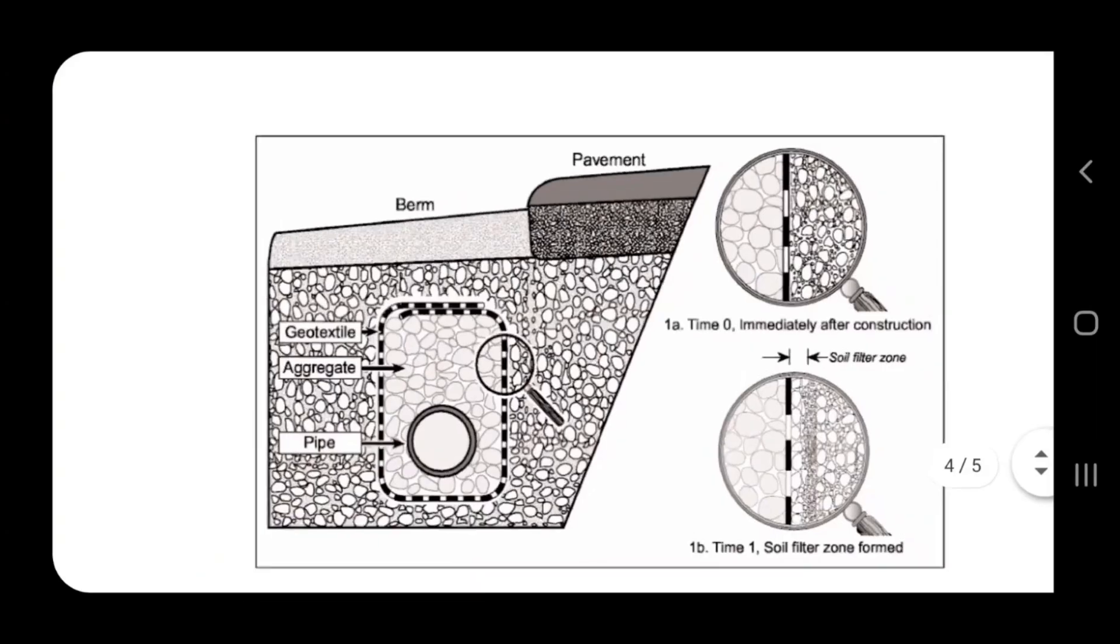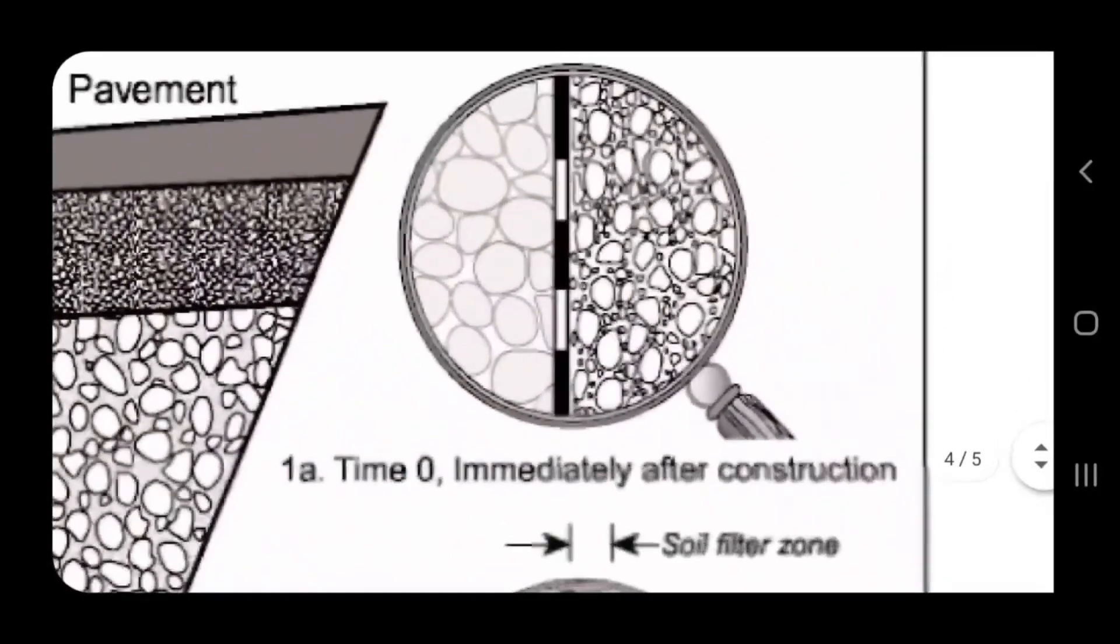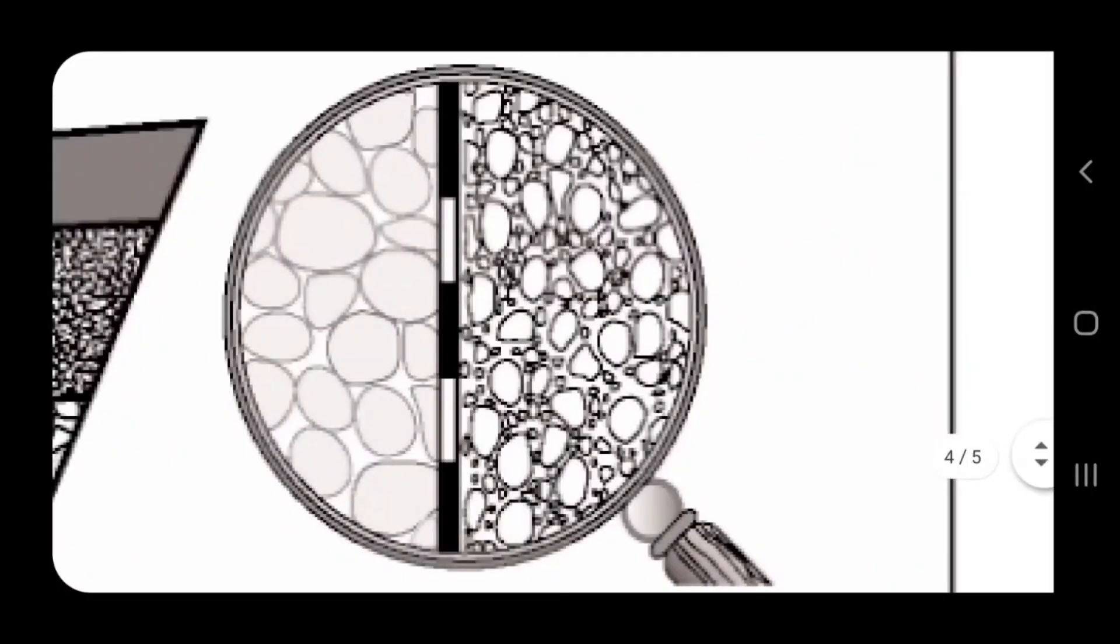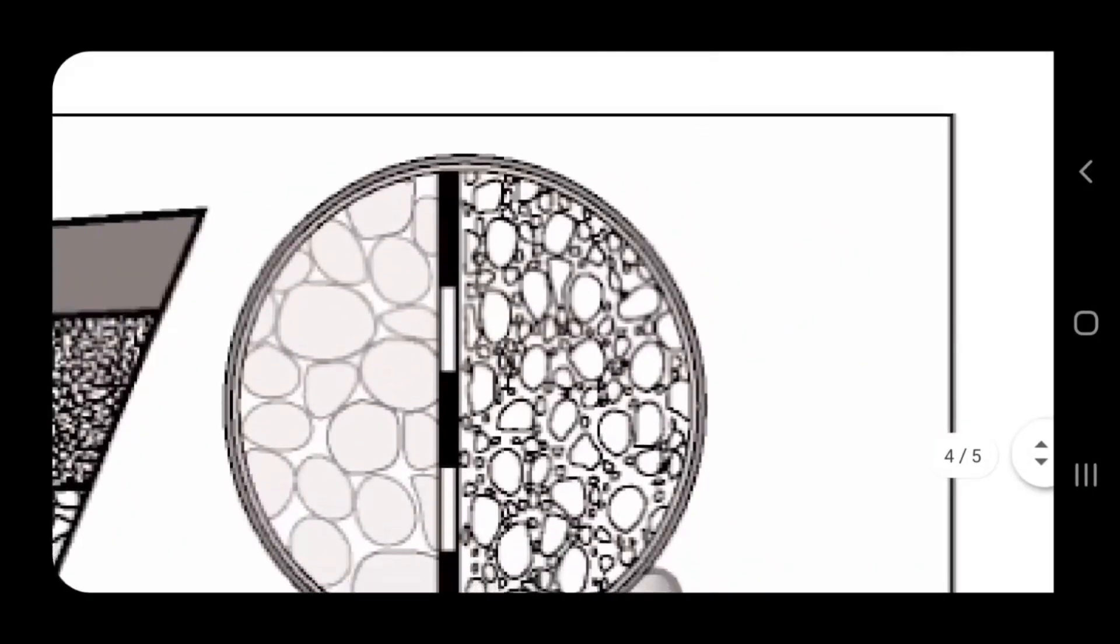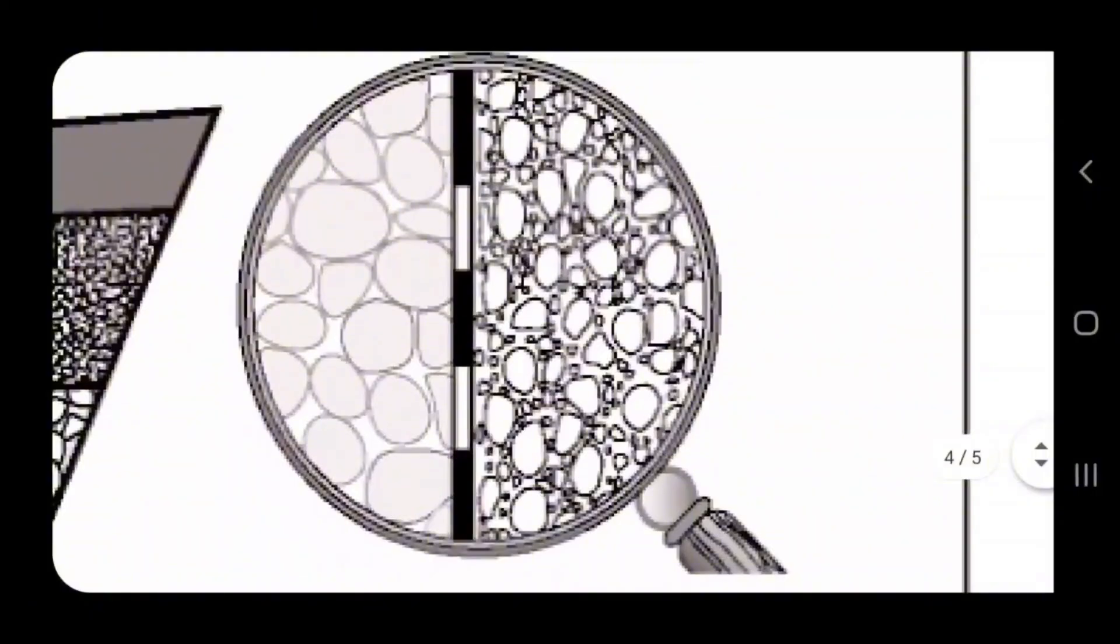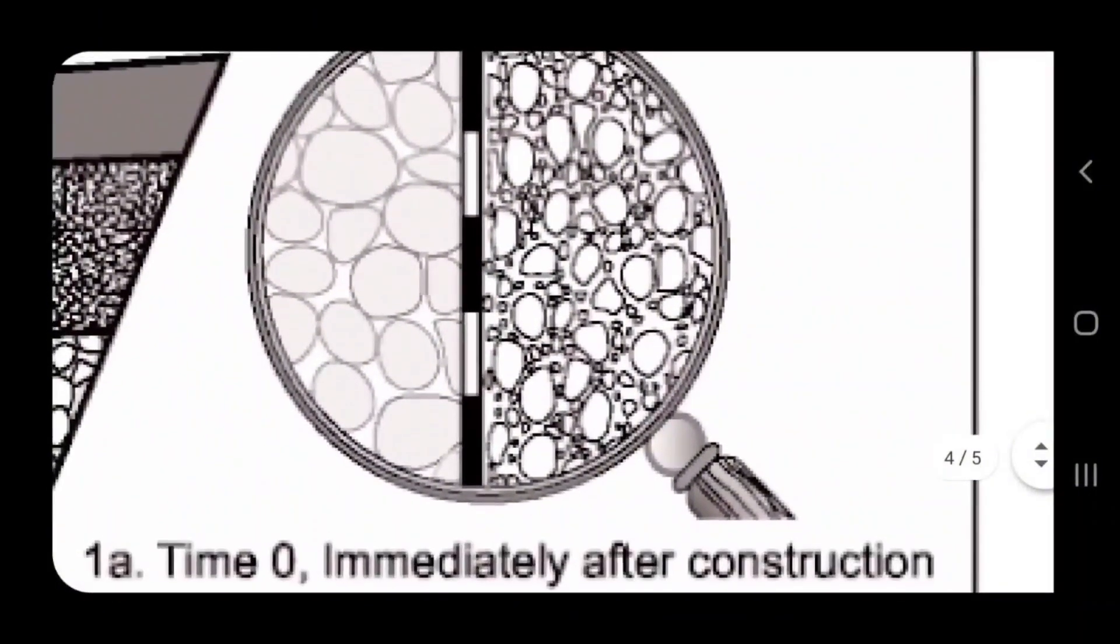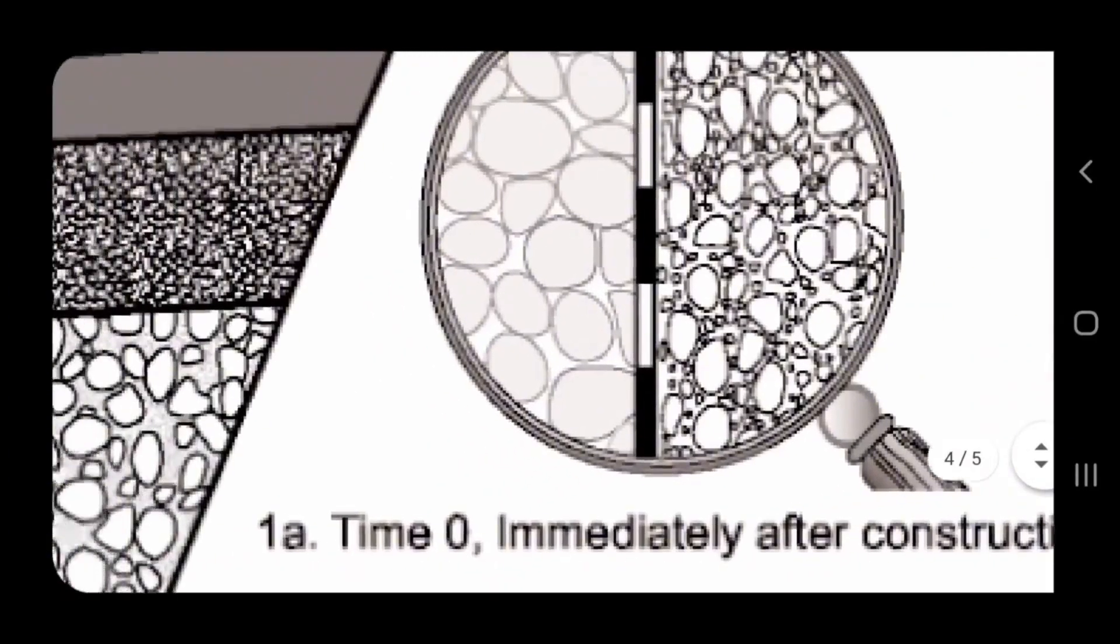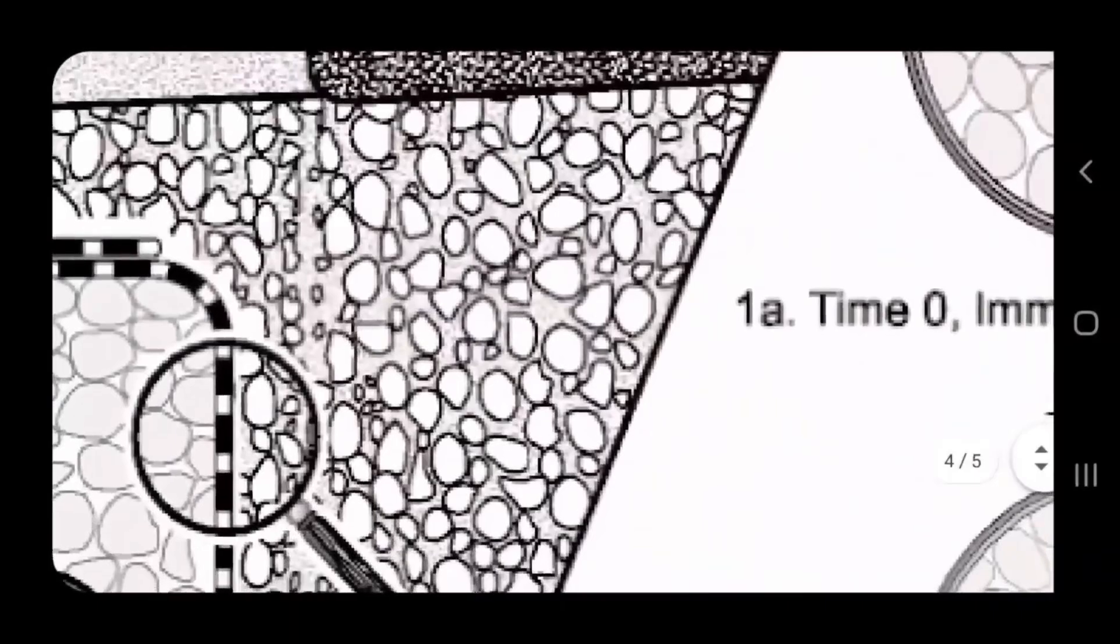They've got a magnifying glass zooming in on the fabric. You've got your draining stone on the left, in the middle of that magnifying glass the non-woven geotextile double punch fabric, and then you have your soil on the right side of that magnifying glass. This is immediately after construction, so that's how it looks.